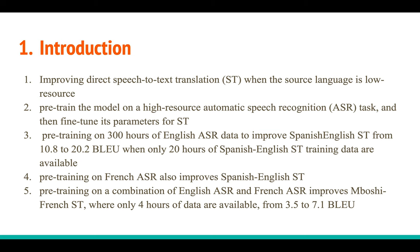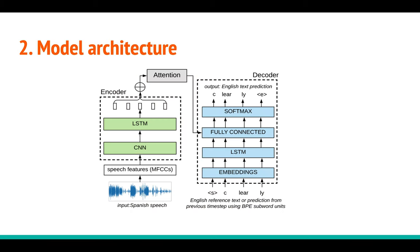There is one more experiment where they combine English ASR and French ASR for pre-training, which improves performance on Boshi-to-French speech translation — a very low-resource setting because Boshi is not a well-known language with very few speakers. They show the BLEU score going from 3.5 to 7.1 for this Boshi-to-French translation task.